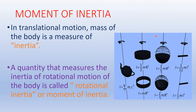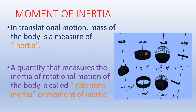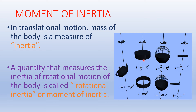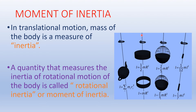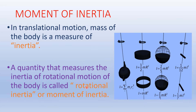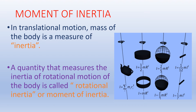In this GIF, we see that all the objects are getting rotated about an axis passing through their center. If you oppose this motion about the axis passing through its center, that resistance is called the moment of inertia.